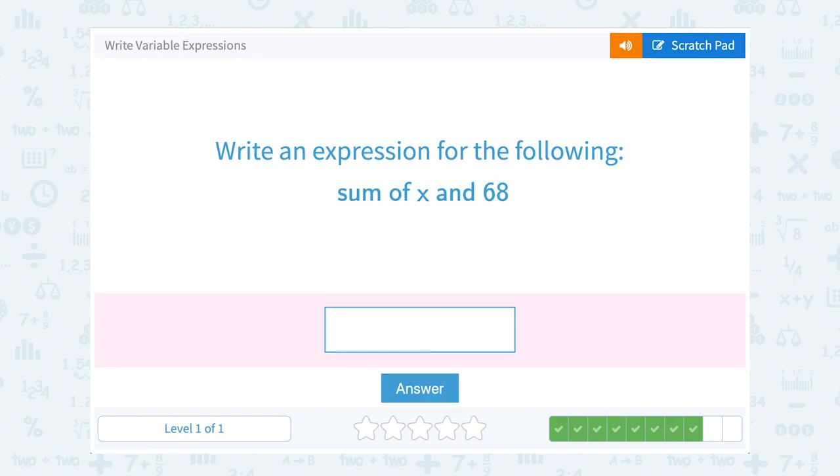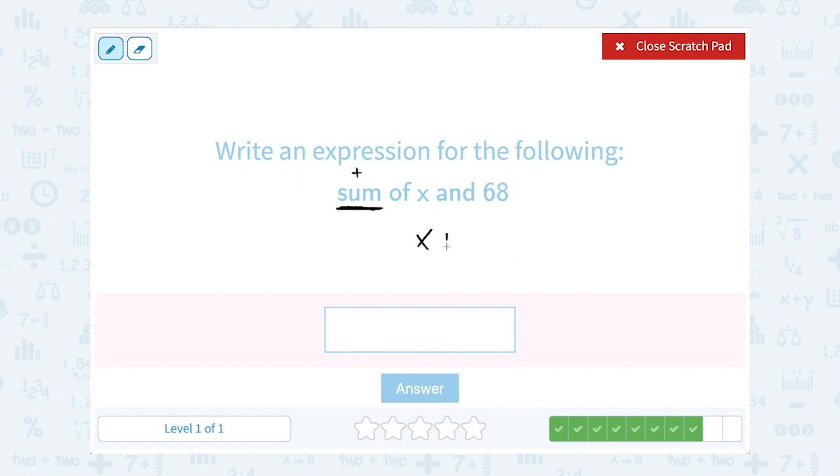The sum of x and 68. Guys, well, you have to keep in mind this vocabulary word sum means the answer you get when you add two numbers. So the sum of x and 68 would be x plus 68.